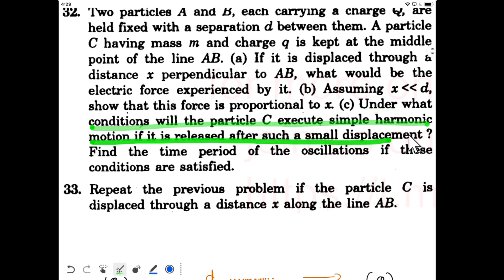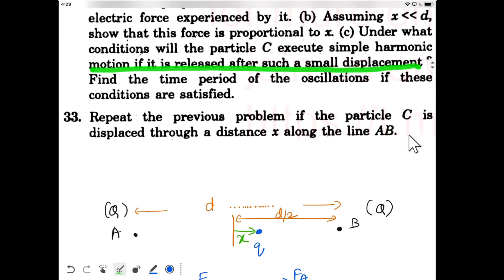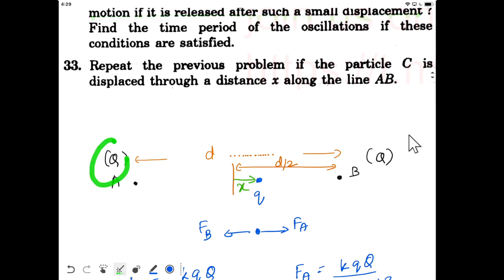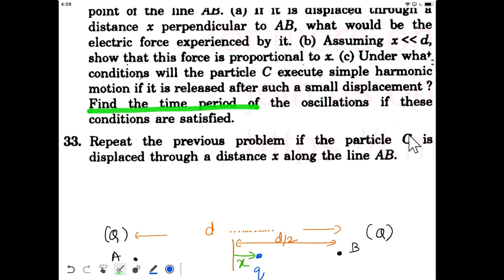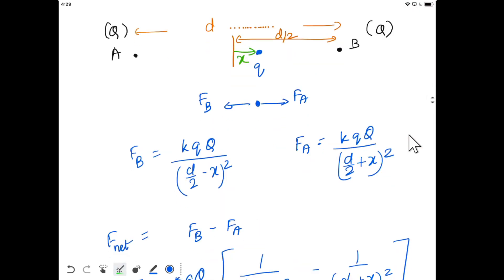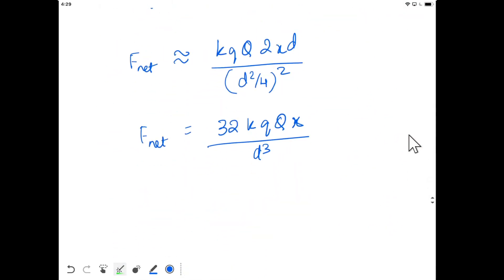The condition is simple: if these two are positive, then this should also be positive so that the net force of repulsion is in the opposite direction to displacement, giving a restoring force. Finally, they are asking to find the time period of oscillations if these conditions are satisfied.